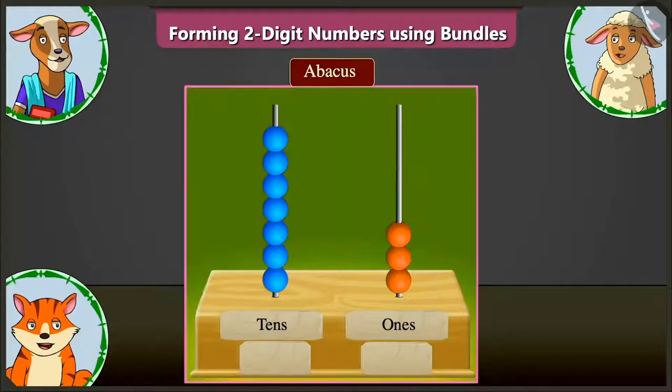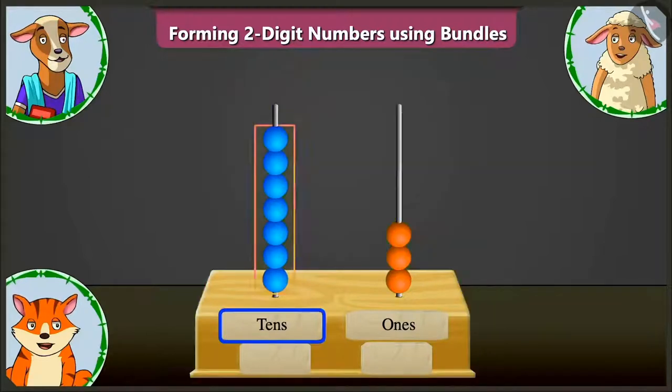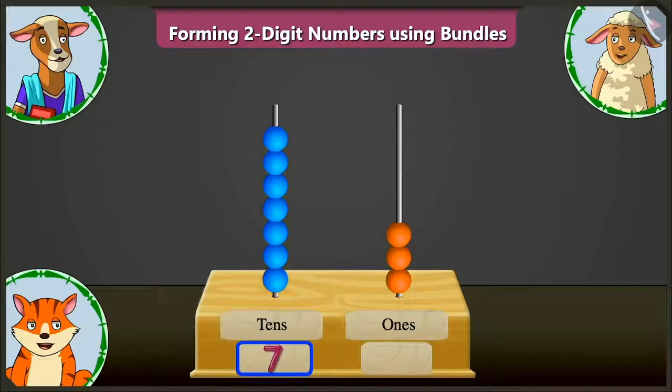In the abacus given here, in the tens box, there are one, two, three, four, five, six and seven beads. So, in the tens box, we have to write seven.